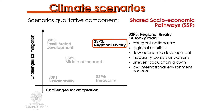SSP 3 is named regional rivalry or a rocky road and presents a resurgent nationalism. Regional conflicts push countries to increasingly focus on domestic or regional issues. Investment in education and technological development decline. The economy development is slow and consumption is material-intensive. Inequalities persist or worsen over time. Population growth is uneven — low in industrialized countries and high in developing ones. There is a low international priority for environmental concerns leading to strong degradation in some regions. This scenario presents strong challenges to both mitigation and adaptation to climate change.